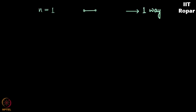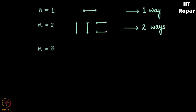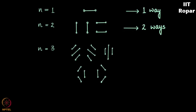When n is equal to 2, I have 4 people seated, and they can shake hands either this way or this way, so this can be done in two ways. When n is 3 there are 6 people seated, and they can handshake this way, or this way, or this way — so there are 5 ways in which 6 people can shake hands without crossing.